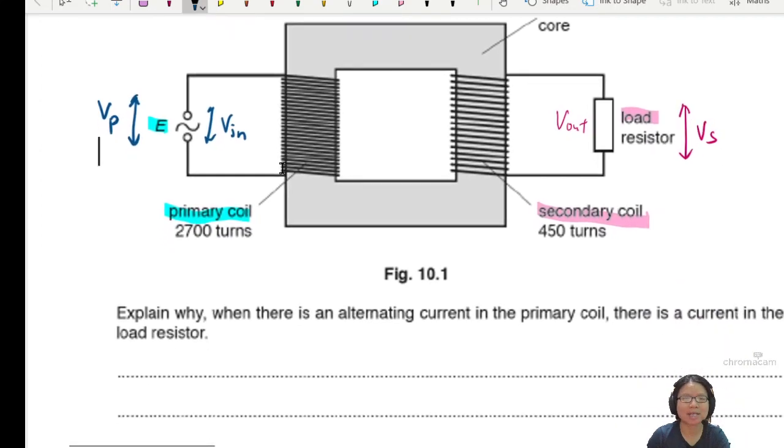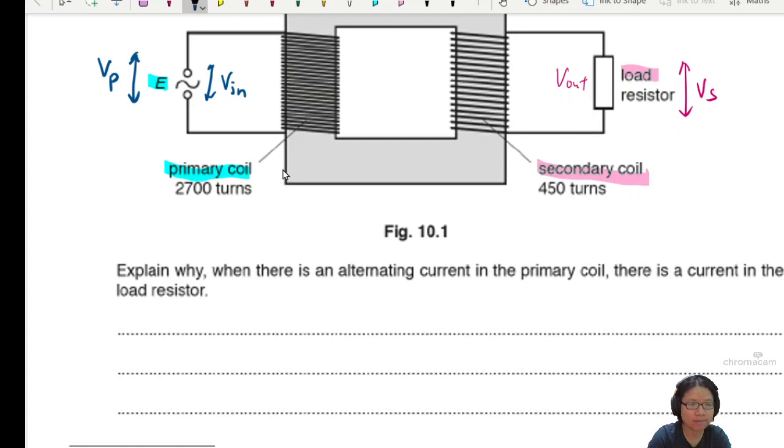Explain. Explain question. Explain why there is an alternating current in the primary coil. There is a current in the load resistor. So they're saying that why is it when we have AC inside this primary coil, it means that there is current in the secondary coil. Interesting. So let's think about Faraday's law.